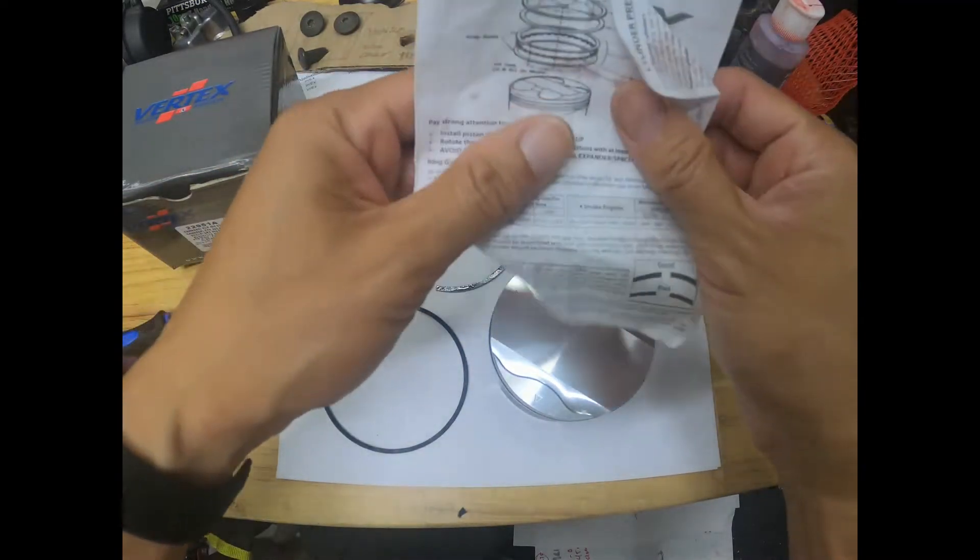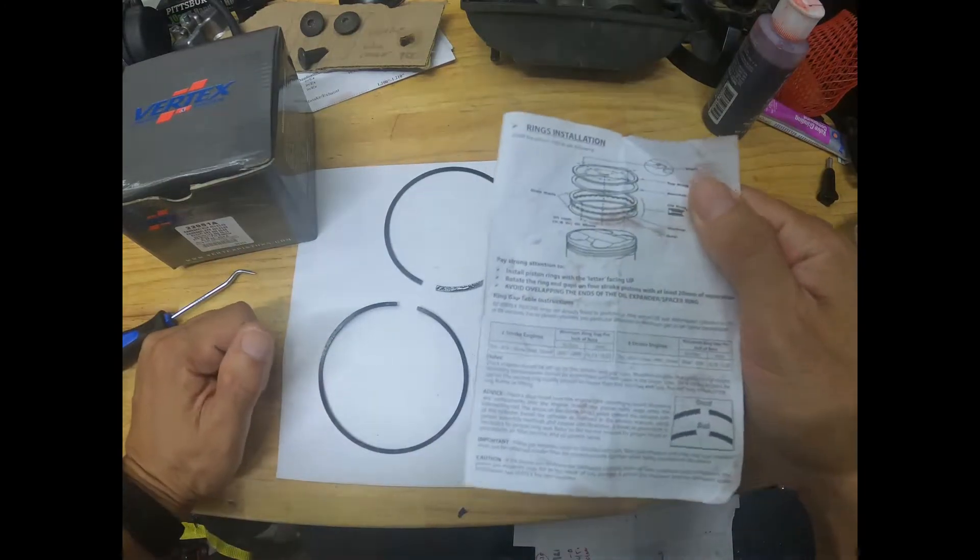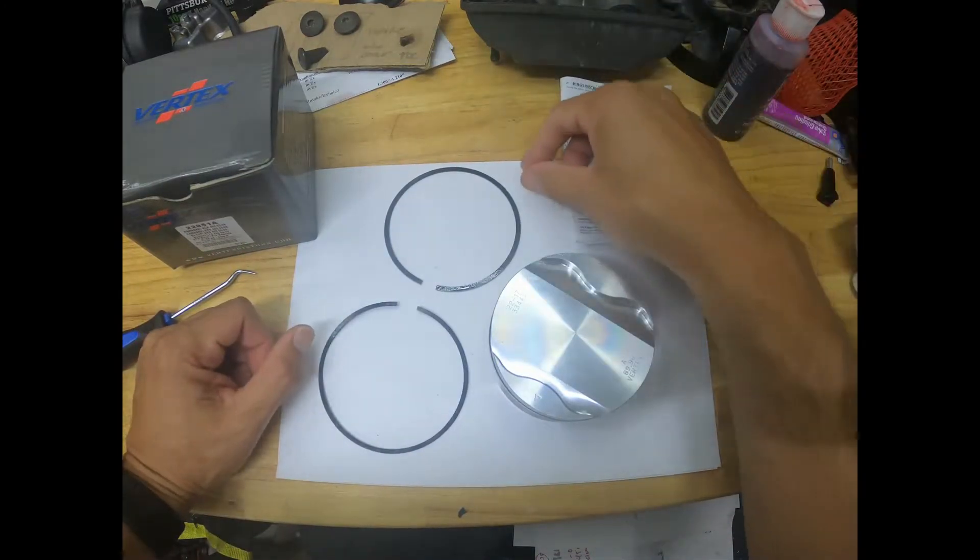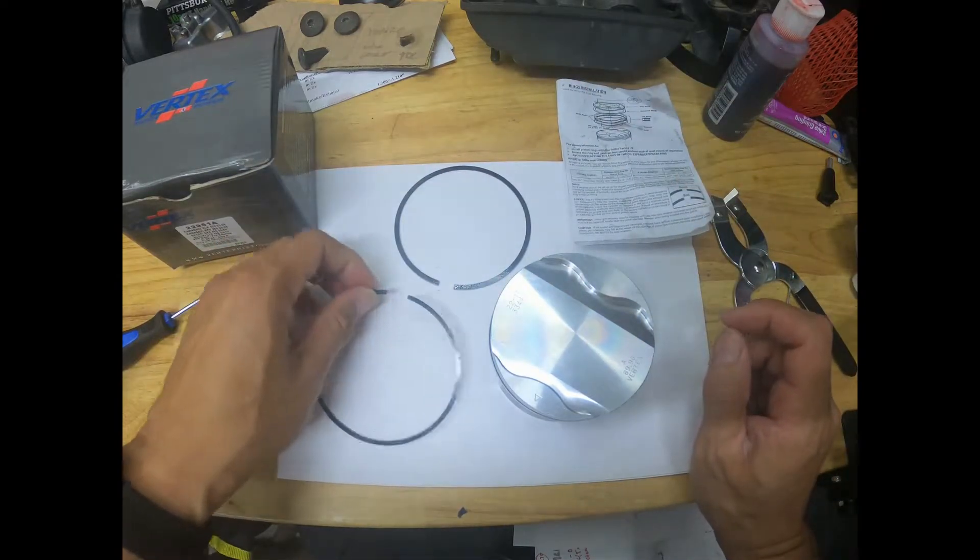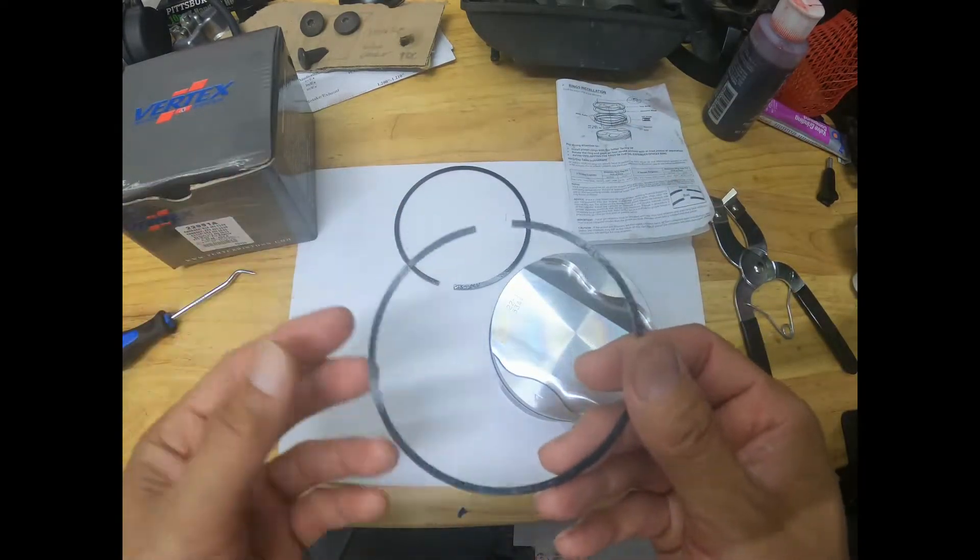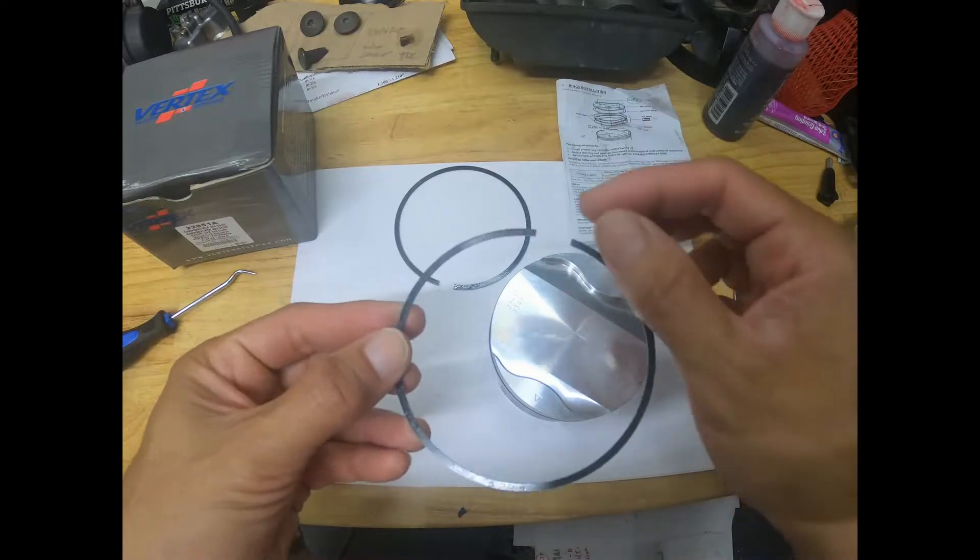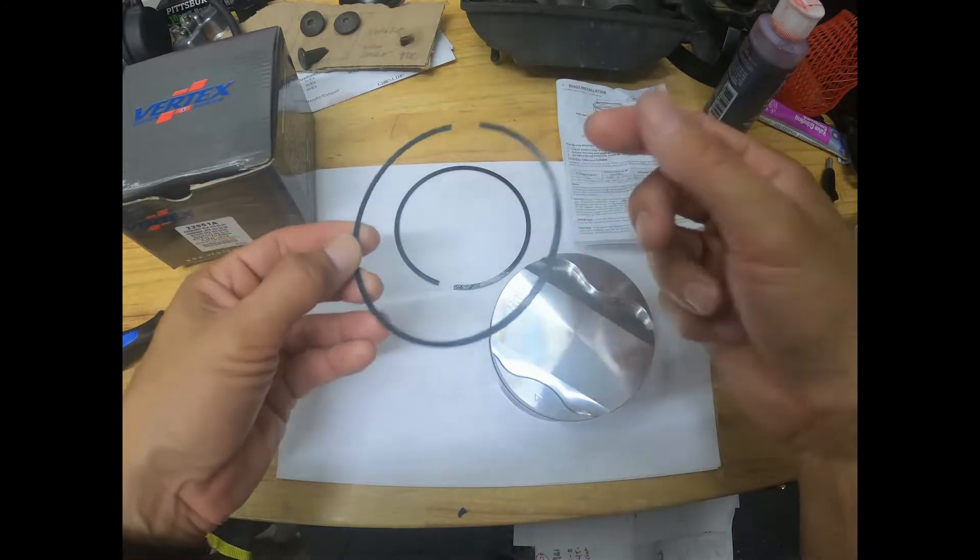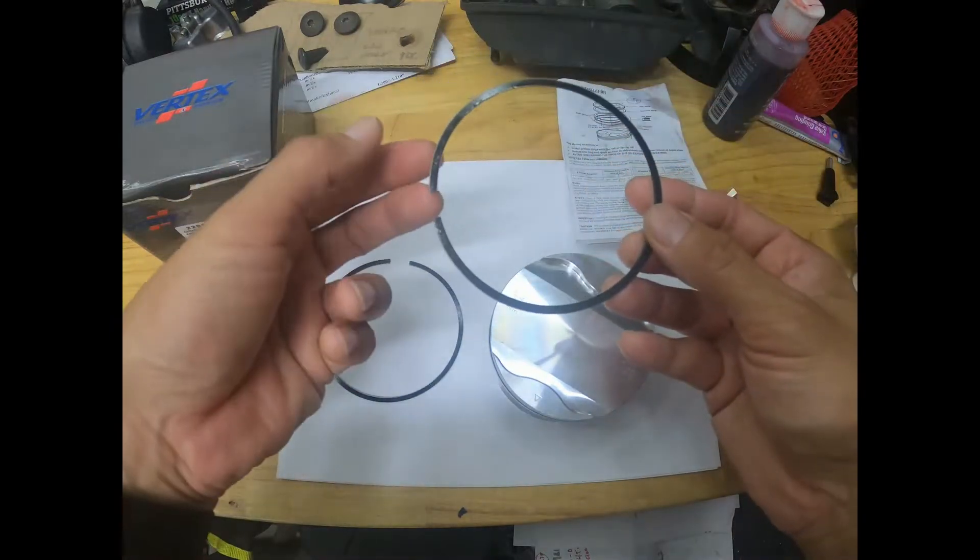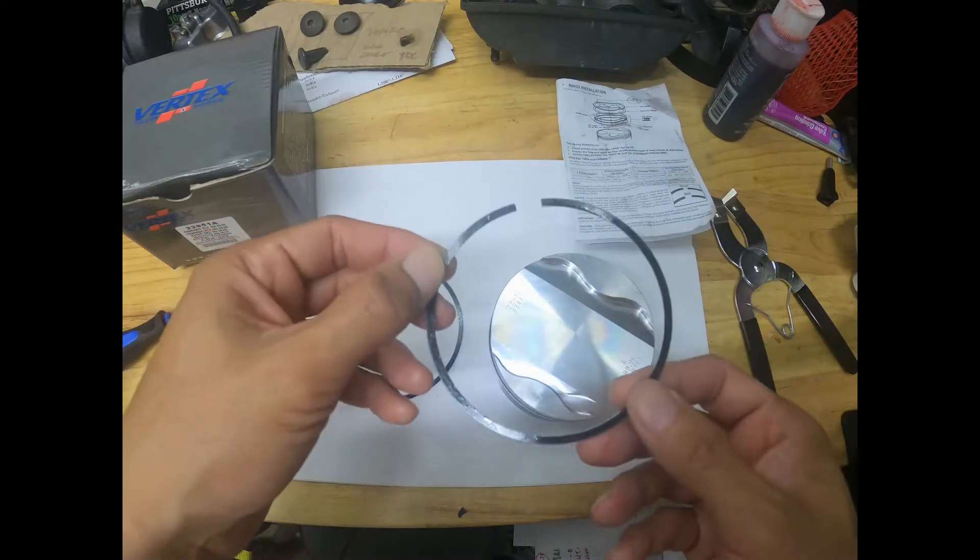The Vertex pistons come with these vague instructions. The two rings, the actual top ring and second ring, usually have a marking where you can tell what direction they're going in. Usually the markings would be at top, or there would be a dot that tells you which way to set these rings.